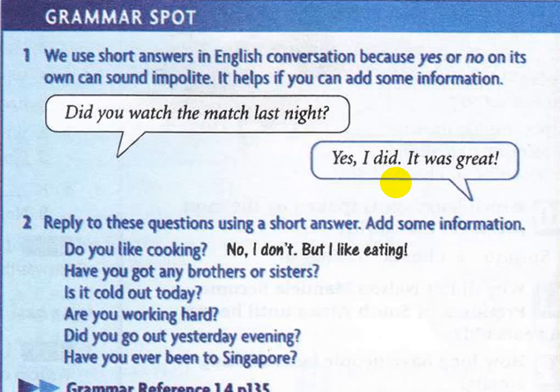We have here short answers. Why do we use short answers in English? We use short answers in English conversation because 'yes' or 'no' on its own can sound impolite. It helps if you can add some information. So we use short answers to make the sentence sound more polite. For example: 'Did you watch the match last night?' You can answer 'Yes, I did — it was great.' It becomes more polite.